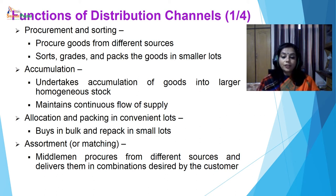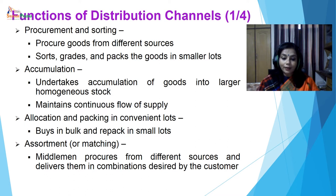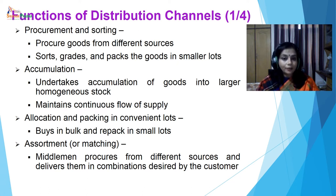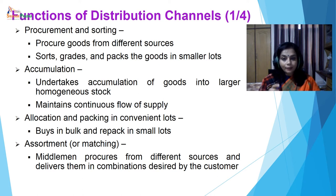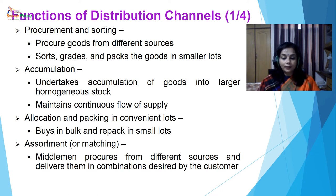Another function is matching, that is assortment. There is a difference between products manufactured and the combination desired by the customer. The middleman procures from different sources and delivers them in combinations desired by the customer. So if they want a combination of products, the middleman makes sure that they make a lot and sell it to the consumer, which again adds to the convenience of the consumers.